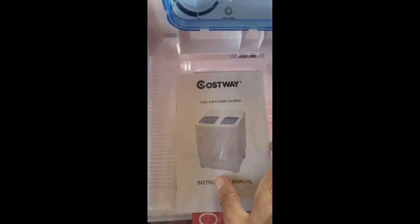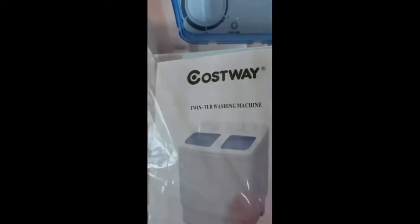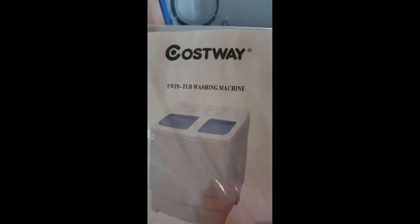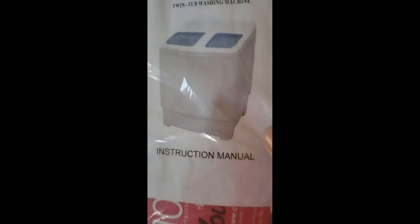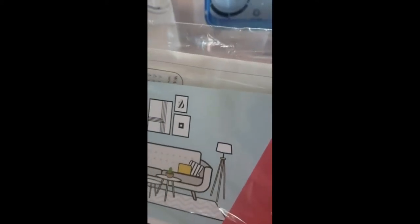This side right here that I'm trying to take the plastic off is the spin side. Here's the instruction manual right here. The name of the washer is the Costway Twin Tub Wash Machine, and this is the instructional manual.